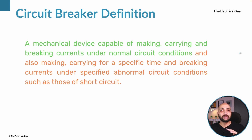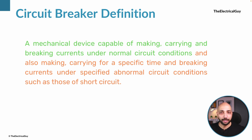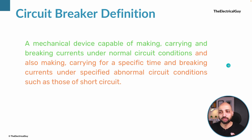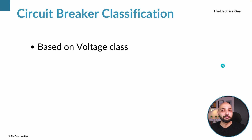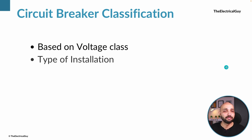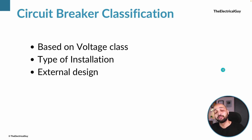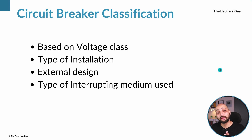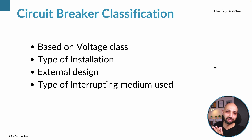The circuit breaker has evolved throughout history and we can group circuit breakers based on different criteria. Those categories are: first, we can classify the breaker based on its voltage class; second, based on the type of installation; third, using the external design of the breaker; and fourth, using the type of interrupting medium used — which is the most important classification.